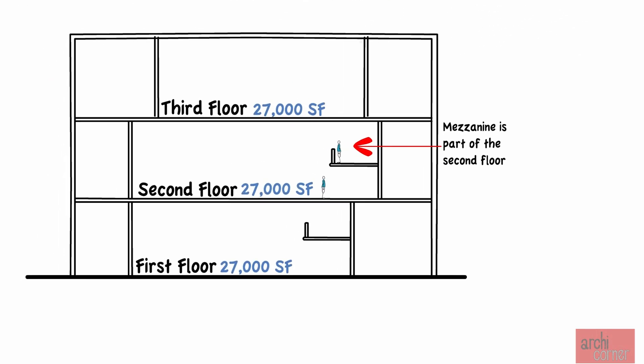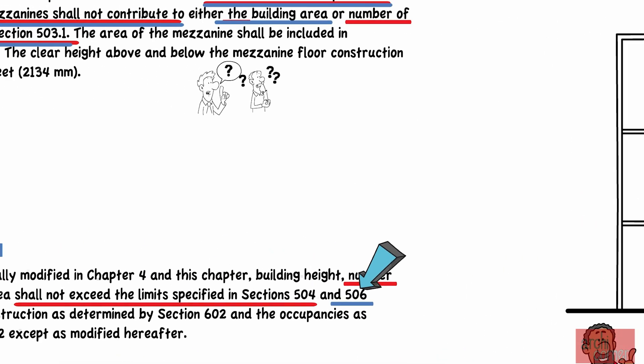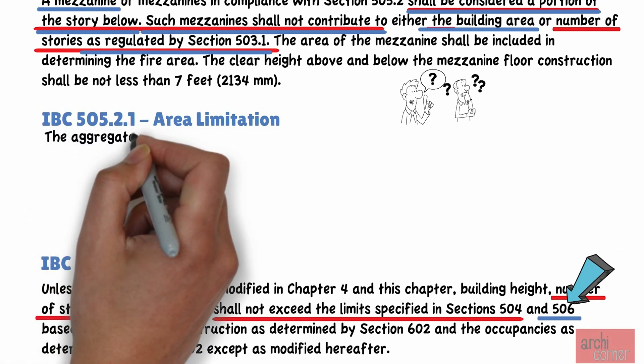Now, you might be wondering, well, if the square footages of a mezzanine do not count towards the allowed square footage of the floor, is there a limit to how large a mezzanine can be? And well, of course there is. Section 505.2.1, titled Area Limitation, states in part...